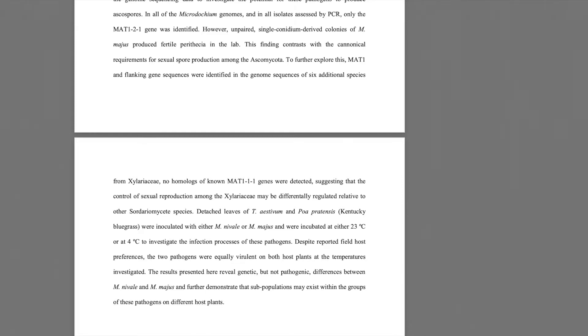Detached leaves of T. aestivum and Poa pratensis, Kentucky bluegrass, were inoculated with either M. nivale or M. majus and incubated at either 23°C or 4°C to investigate the infection processes of these pathogens. Despite reported field host preferences, the two pathogens were equally virulent on both host plants at the temperatures investigated. The results reveal genetic but not pathogenic differences between M. nivale and M. majus, and further demonstrate that subpopulations may exist within these pathogen groups on different host plants.